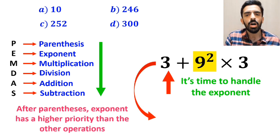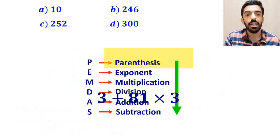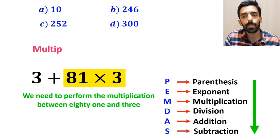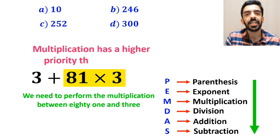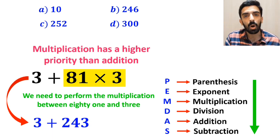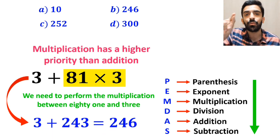We write this expression as 3 + 81 × 3. Finally, we need to perform the multiplication between 81 and 3 because multiplication has a higher priority than addition. This expression simplifies to 3 + 243, which ultimately gives us the answer 246.